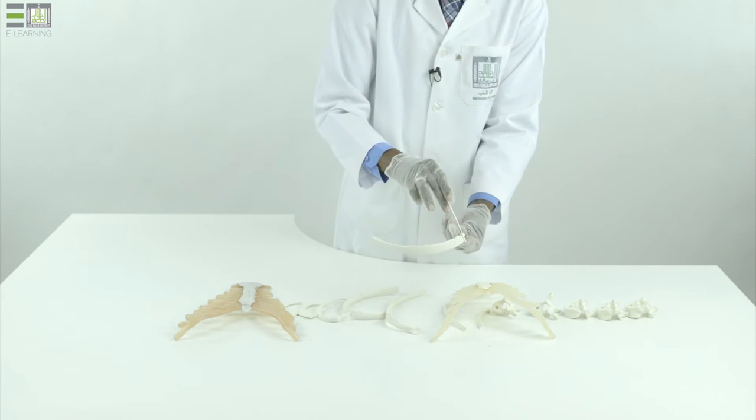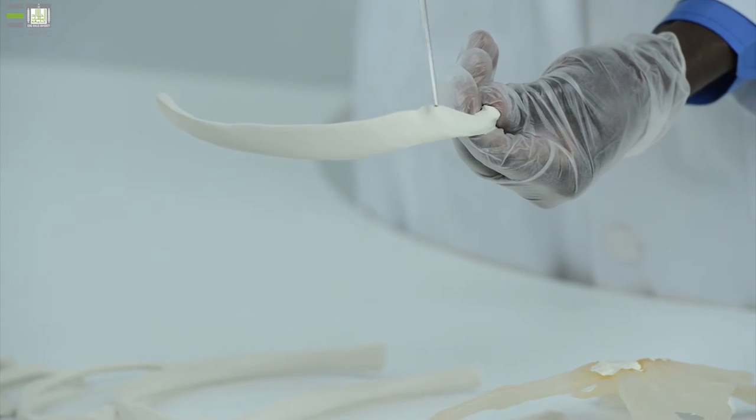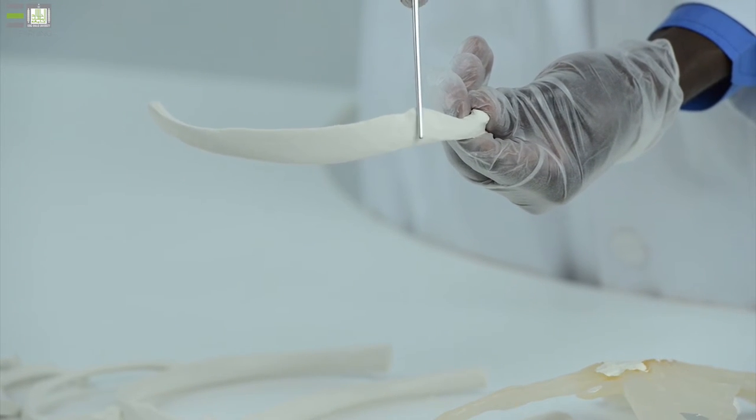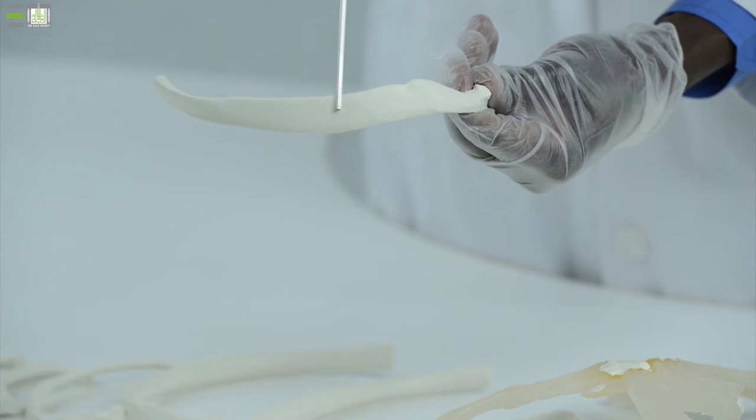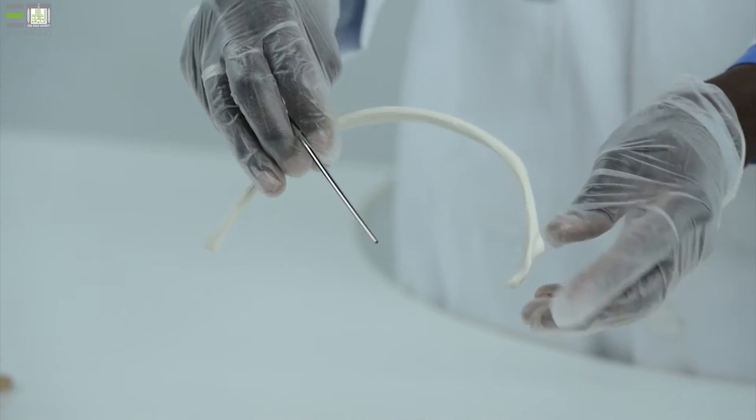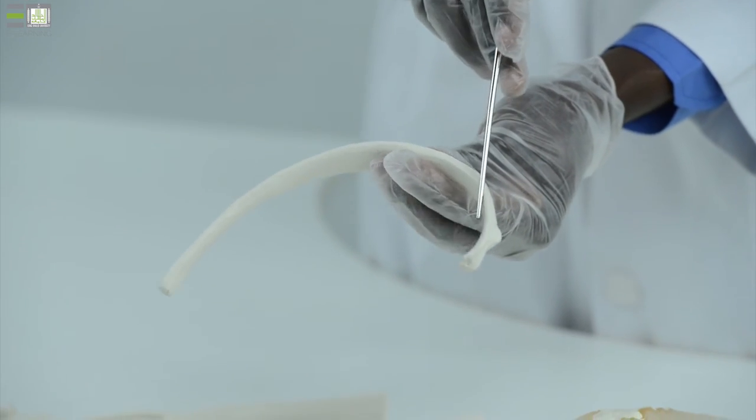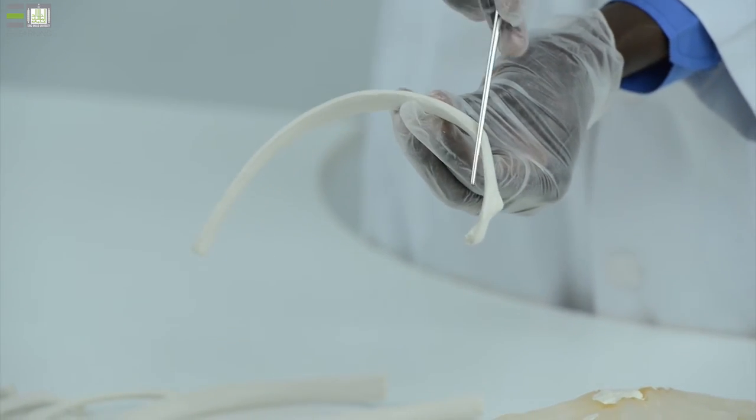Where the shaft is sharply inclined anteriorly, this area is called angle of the rib. It is the weakest point within the shaft of the rib. These are the characteristics of the typical rib.